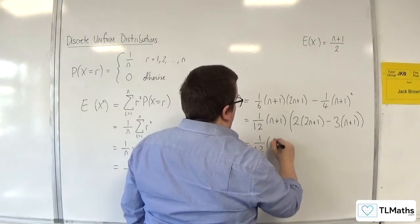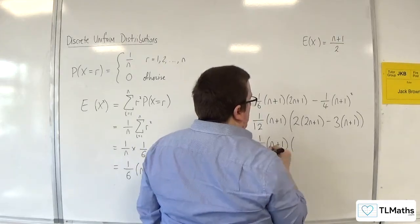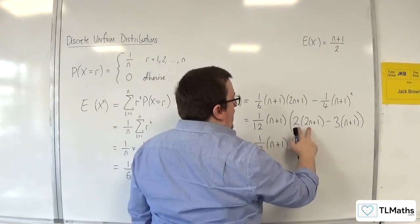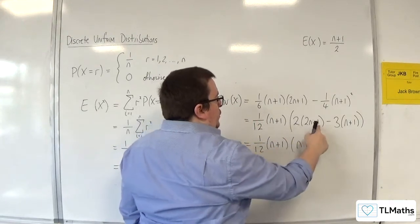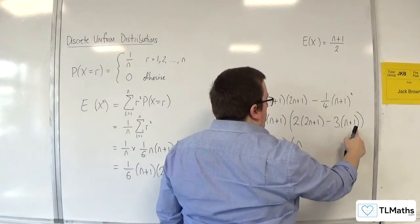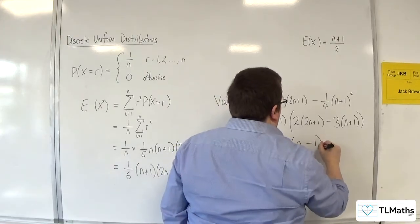So 1 twelfth, n plus 1, times we have 4n take away 3n, so n. Then we've got 2 lots of 1 take away 3 lots of 1, so take away 1.